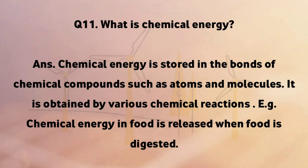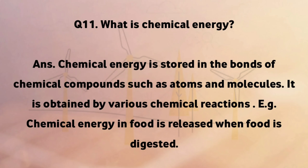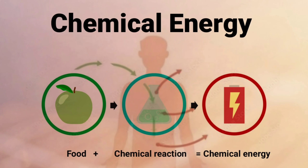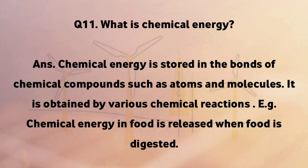What is chemical energy? Chemical energy is stored in the bonds of chemical compounds such as atoms and molecules. It is obtained by various chemical reactions. Example: chemical energy in food is released when food is digested.